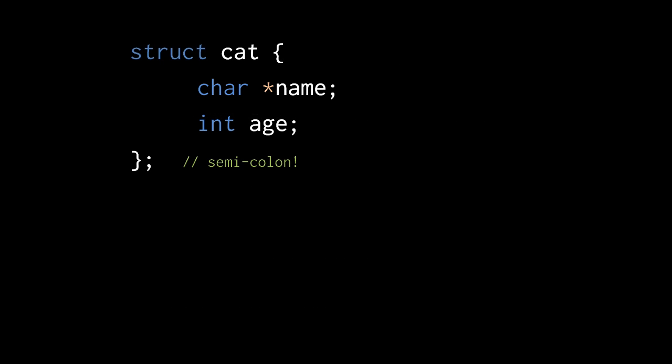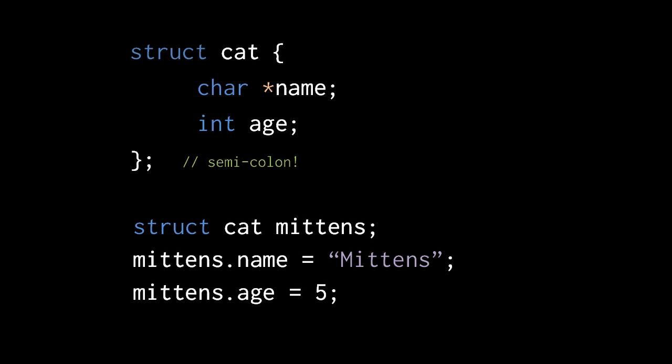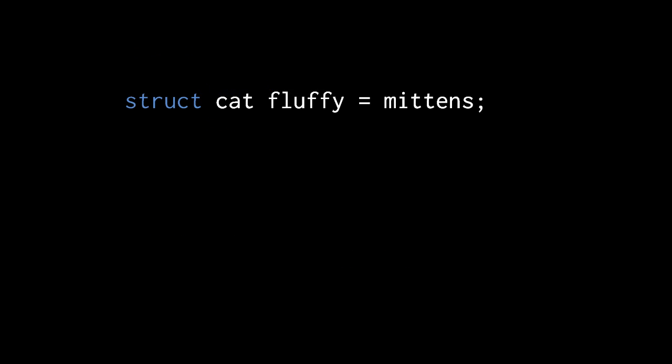Here, for example, we declare a type called struct cat with two members: a char pointer name and an int age. We then create a struct cat variable mittens, assign its name member the string "mittens", and assign its age member the int value 5. We can assign one struct instance to another — assigning mittens to fluffy copies the value of every member of mittens to the corresponding member of fluffy.